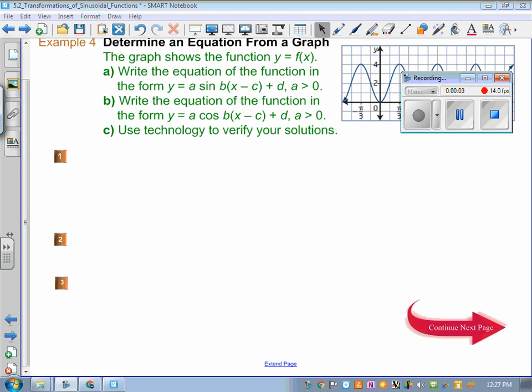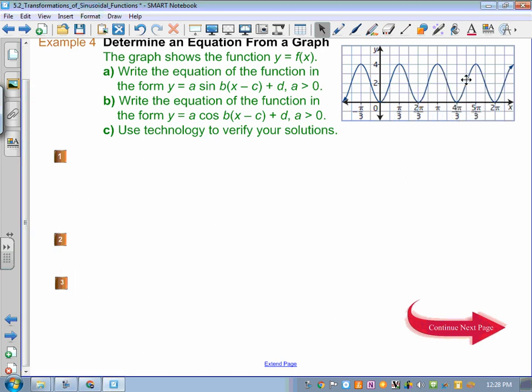Last example in 5.2 here, number four. What we're going to look at is the tricky part. Honestly, going from a graph to an equation typically is harder. What is nice is that A, B, and D are consistently the same from sine to cosine. It's the C, the phase shift, that is going to change that.